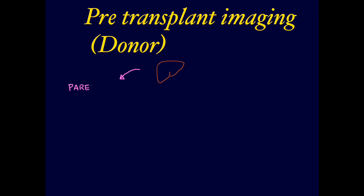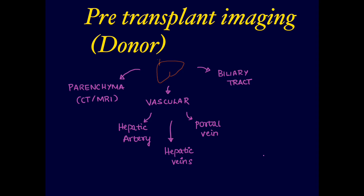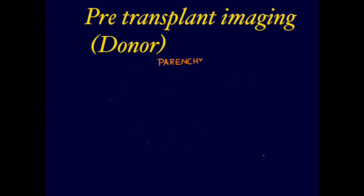Coming to pre-transplant imaging of the donor: we assess how healthy the donor liver is for transplantation. First, parenchymal imaging is done via CT and MRI. We must first rule out steatosis or fatty liver — if there is more than 30% fatty liver, it is unsuitable for transplantation.